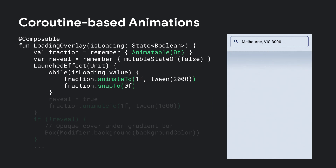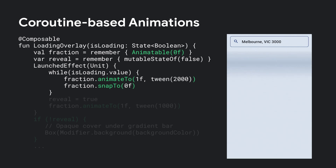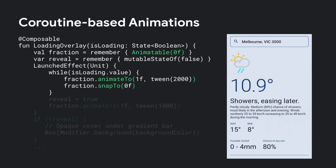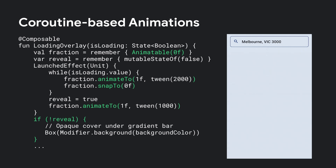Since we want to animate the gradient bar from top to bottom and then snap back to the top, we call animate first with one as the target using a 2,000 millisecond tween animation, followed by snap to reset the bar to the top. Both animate and snap are suspending functions, so we can sequence them and repeat in a while loop until loading is finished. Since we only check the loading state before each scan pass, any change to the loading state takes effect after the current pass finishes — creating a custom interruption handling behavior. Once content finishes loading, we exit the while loop, change the reveal state, and do a final pass to animate the gradient bar to the bottom, stopping the opaque cover overlay so the content underneath is revealed in the final scan.